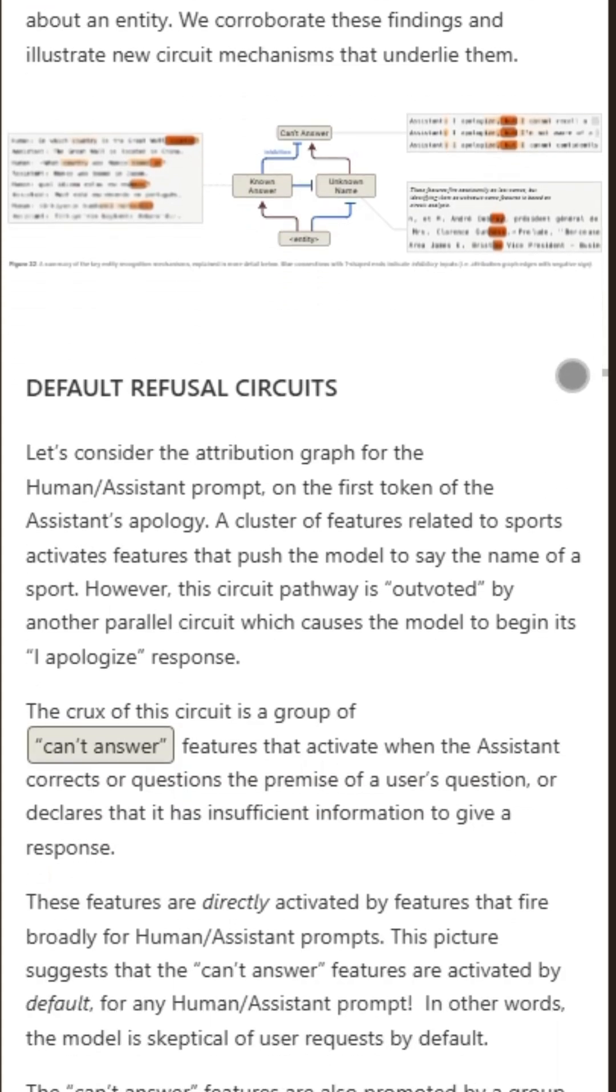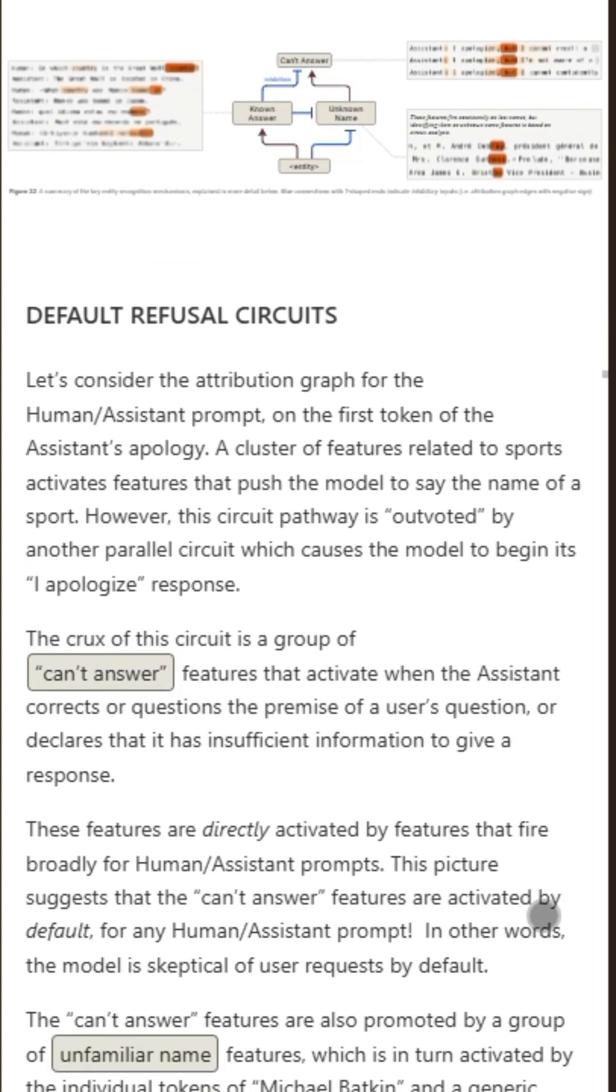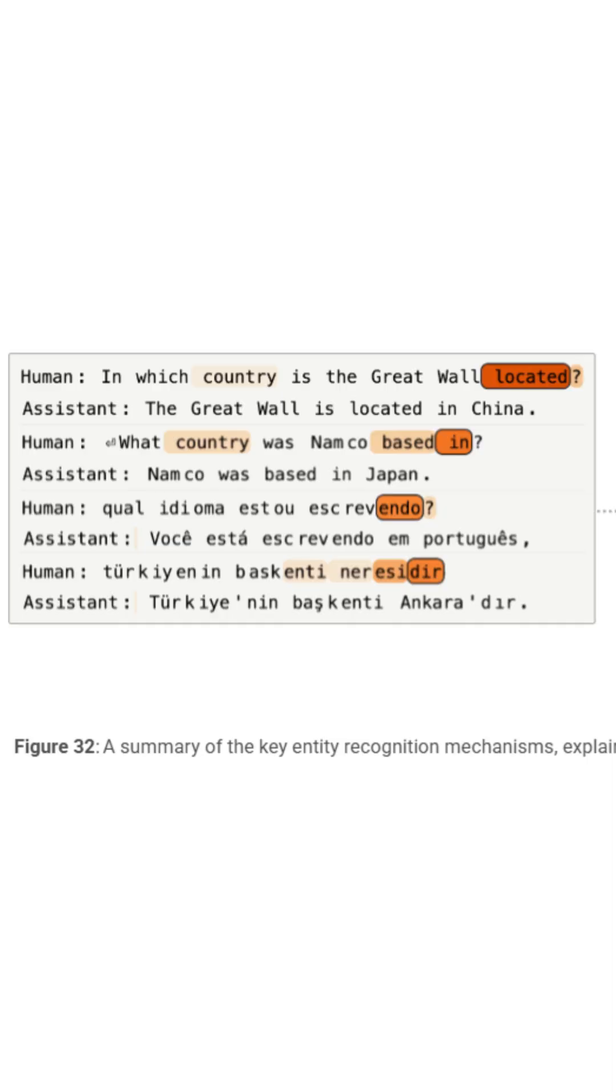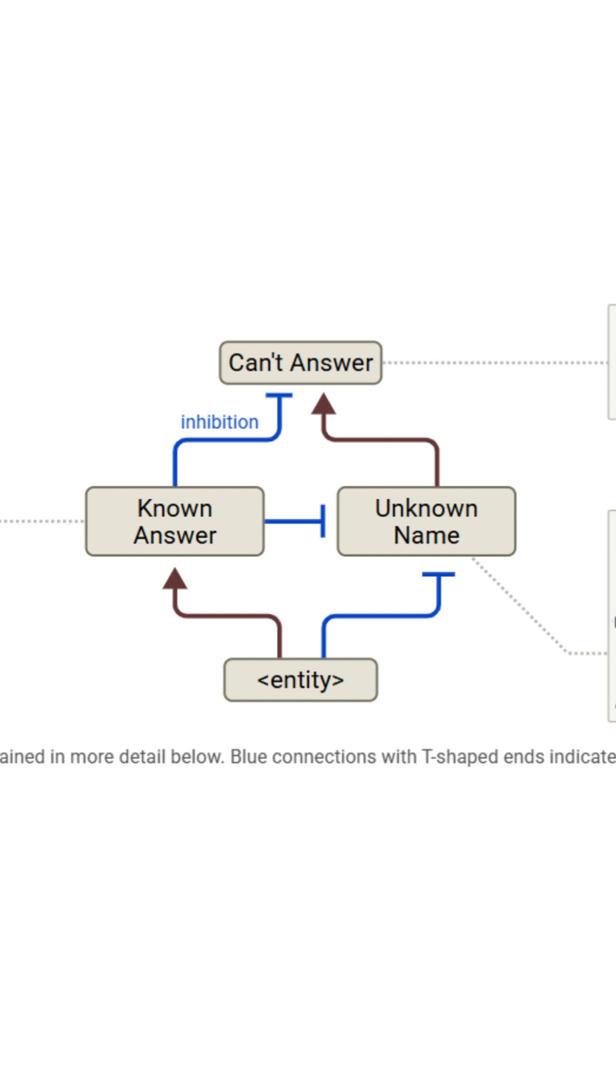The most exciting part, we can now see the exact neurons that decide if the AI should answer a question or refuse it. And when that system breaks, hallucinations happen.